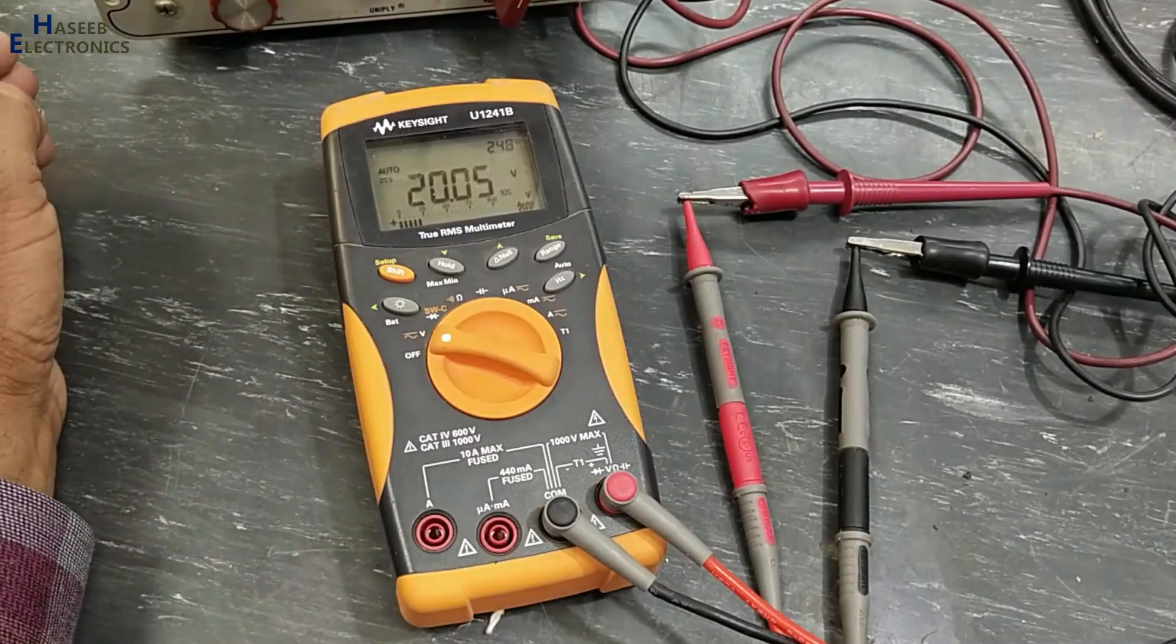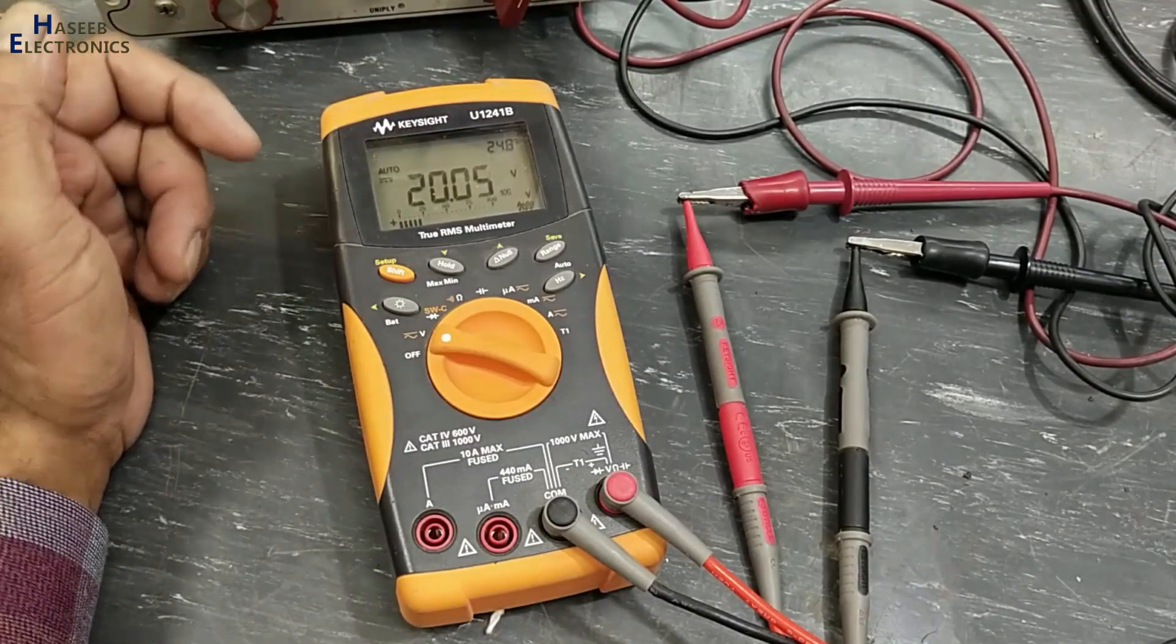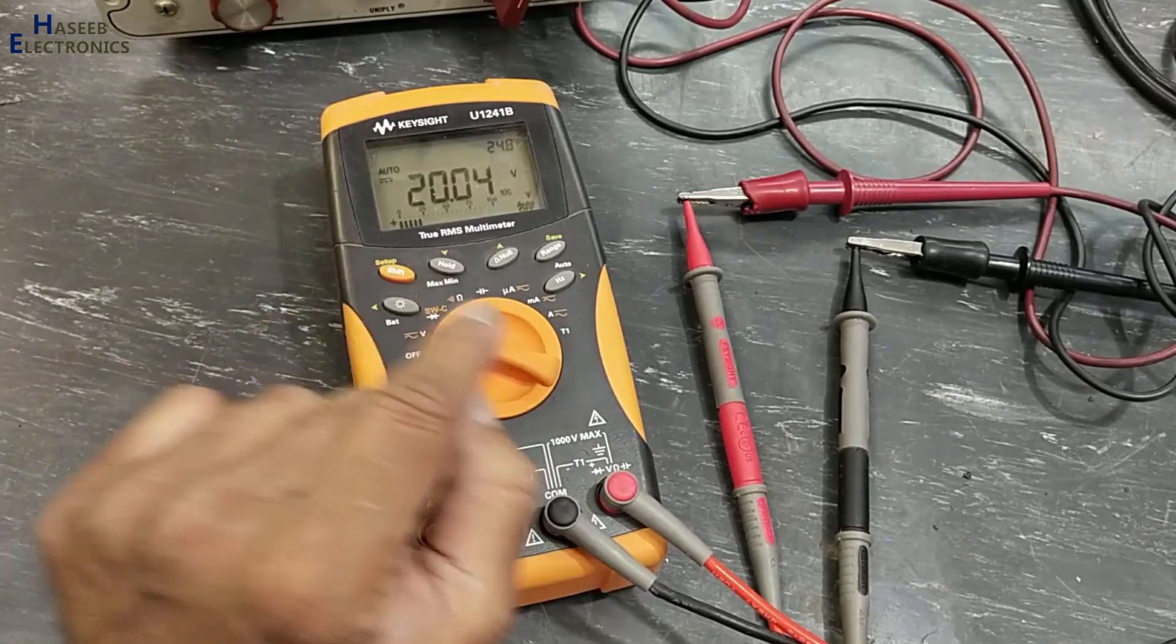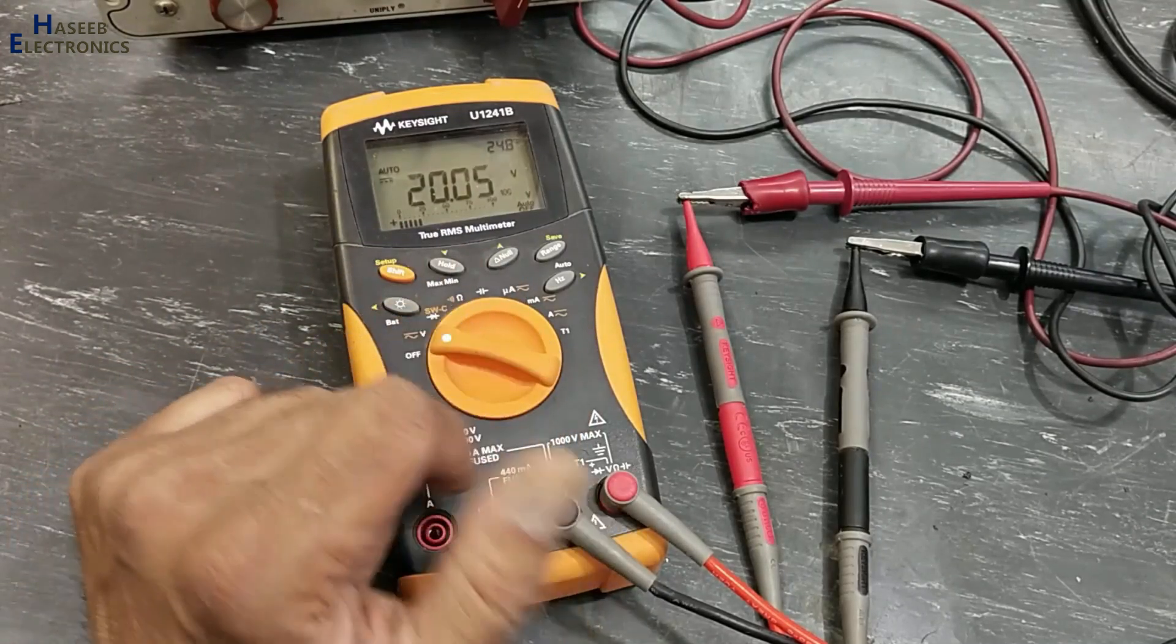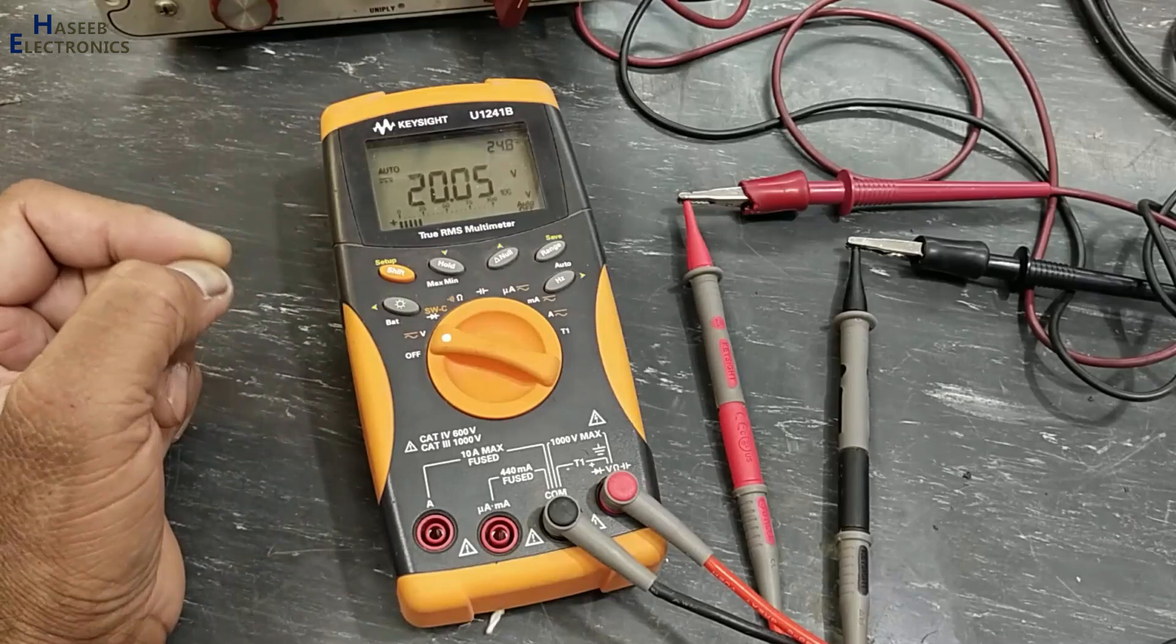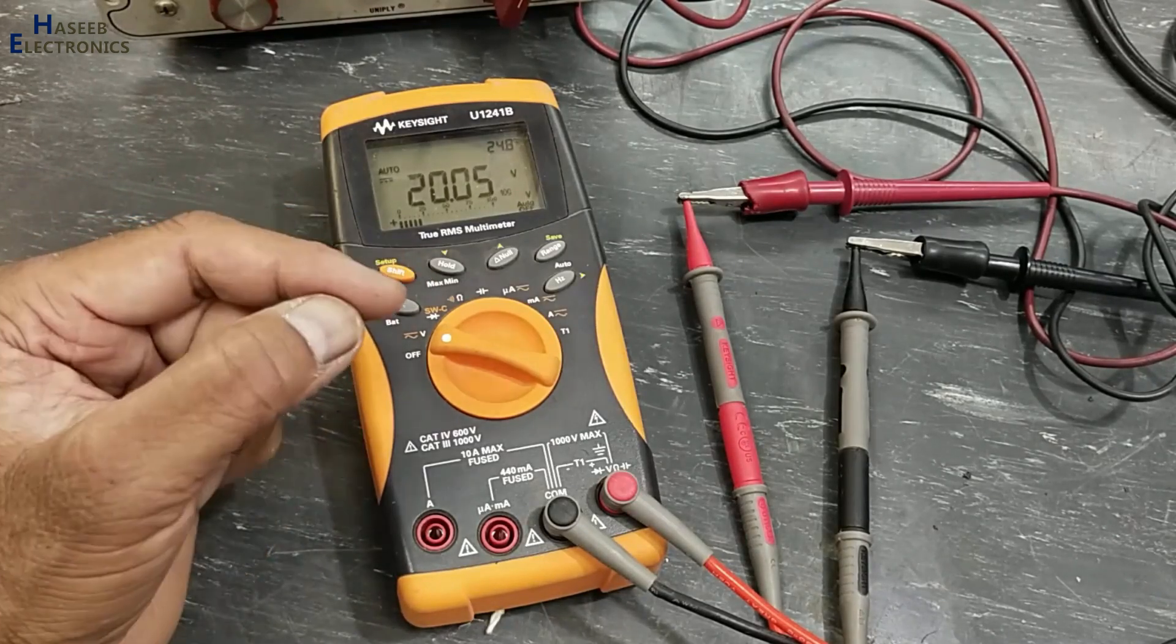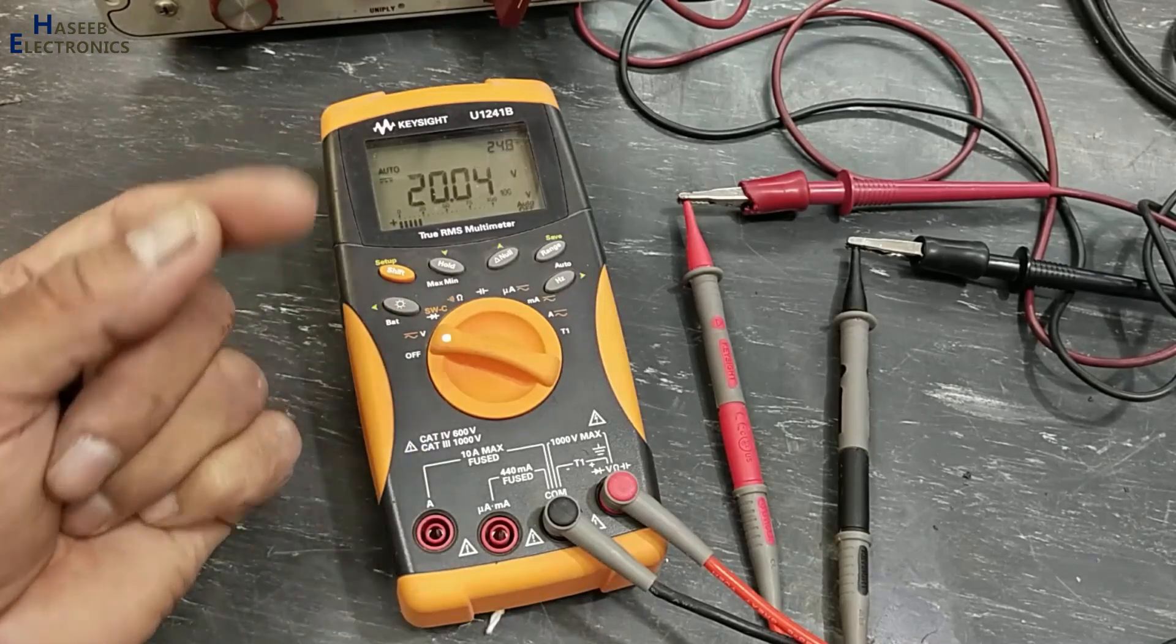Assalamu alaikum wa rahmatullahi wa barakatuhu friends, welcome back to my channel. If your multimeter has null function or relative function, it is a special measurement when we are analyzing any circuit to check condition, is it increasing or decreasing from any specific point.